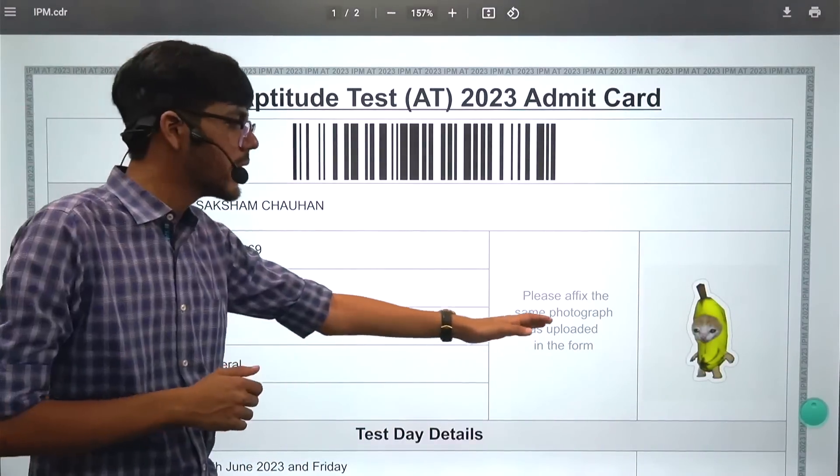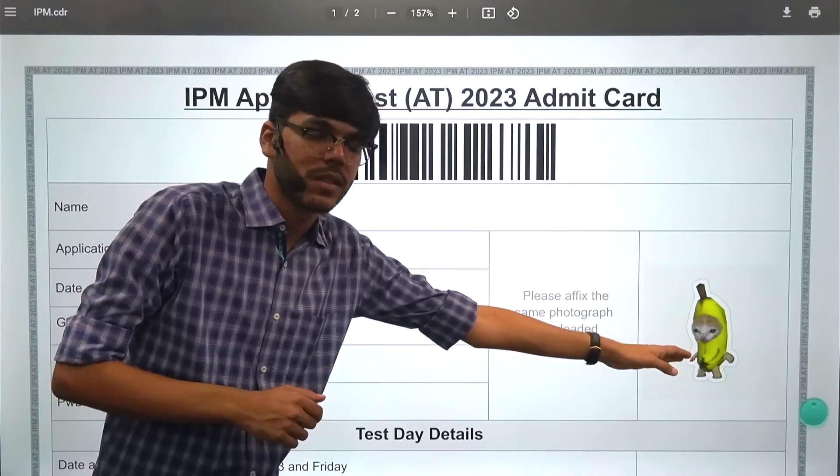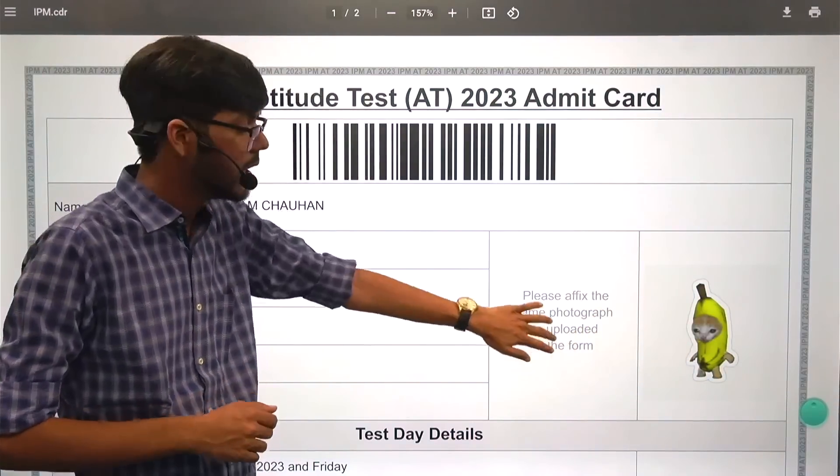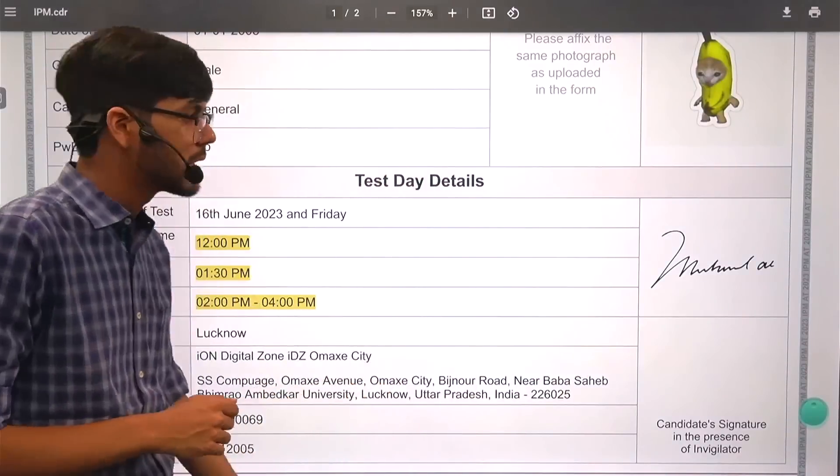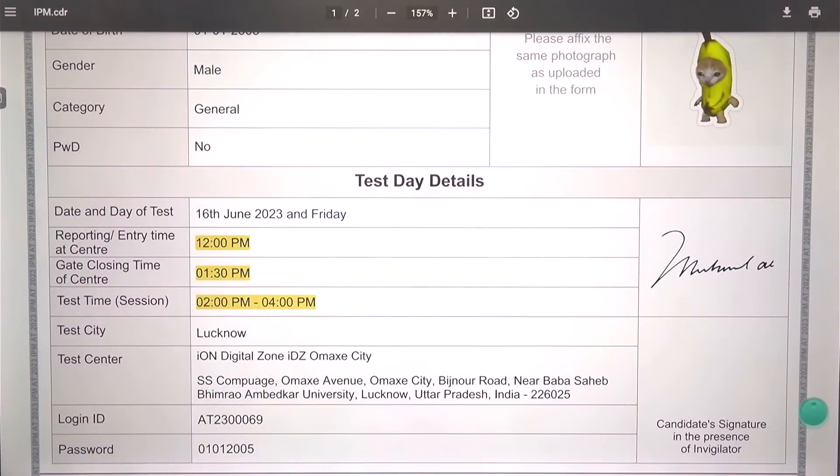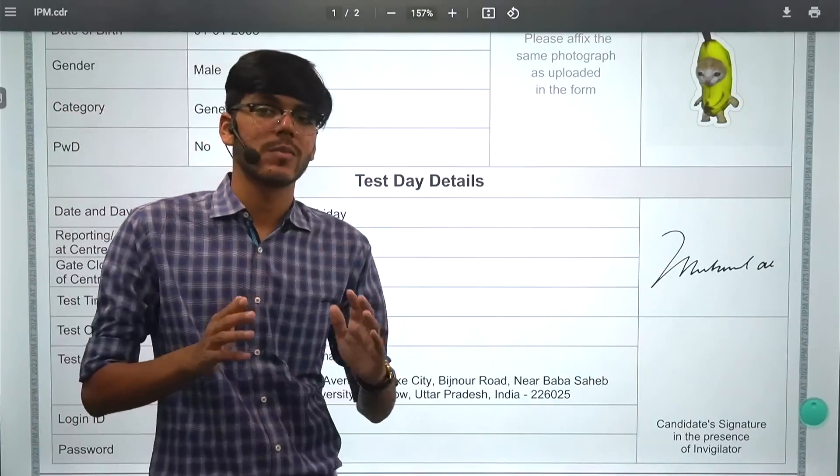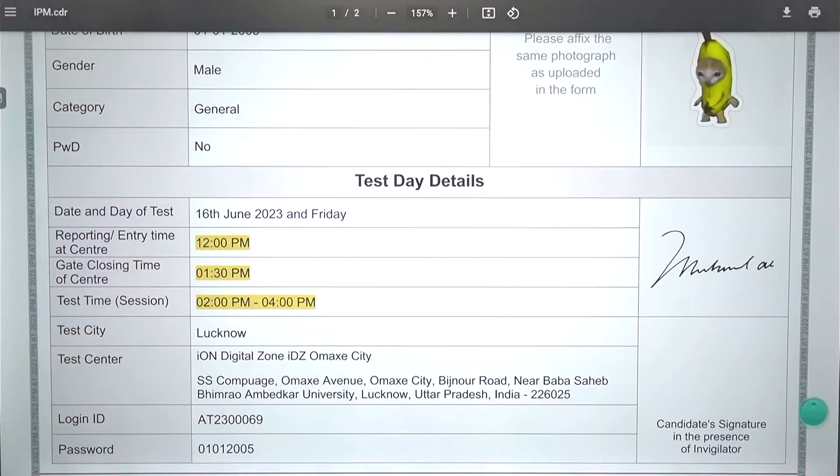Your admit card, this is how it will look like. Here you have the same photograph that you have pasted there. It will paste it here. You have to sign here. You don't have to sign now. You have to sign in the invigilator's presence. Your exam will be done tomorrow, 16 June, which is a Friday, 2 to 4 p.m. And your reporting time is between 12 p.m. to 1:30 p.m.